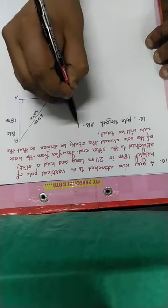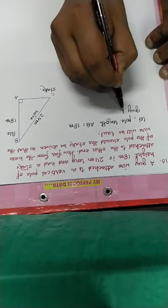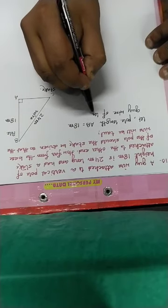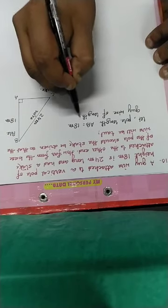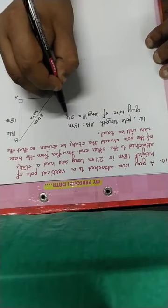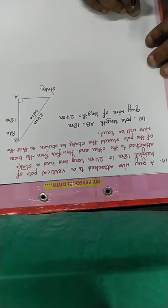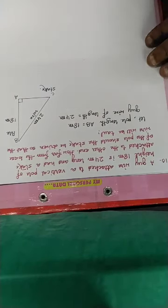The pole length AB is equal to 18 meters. Guy wire of length 24 meters.